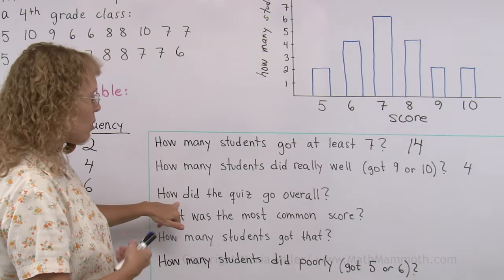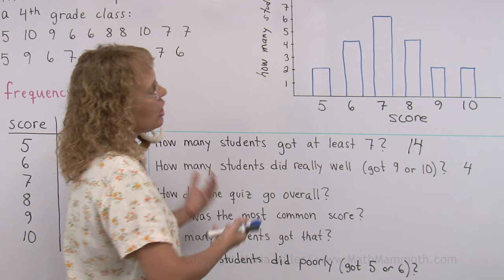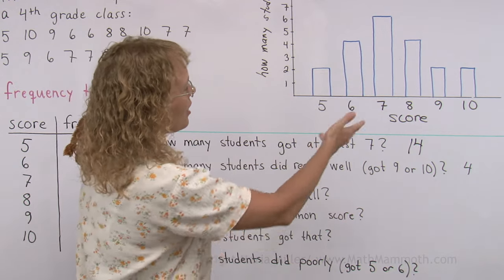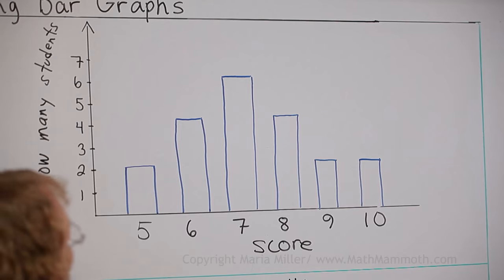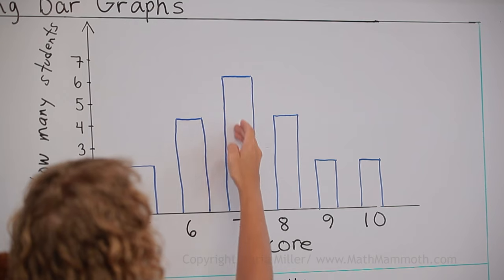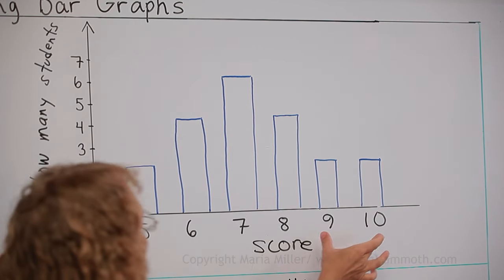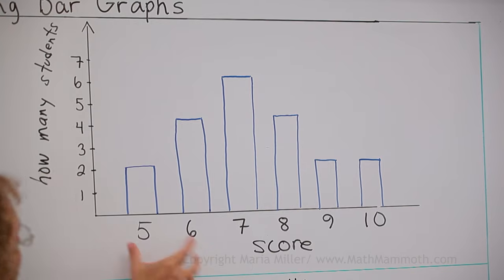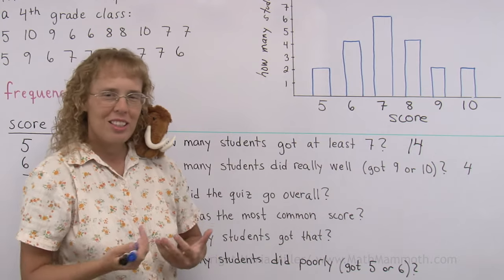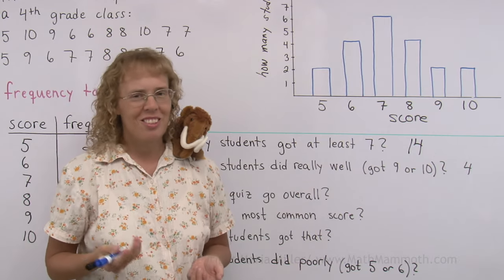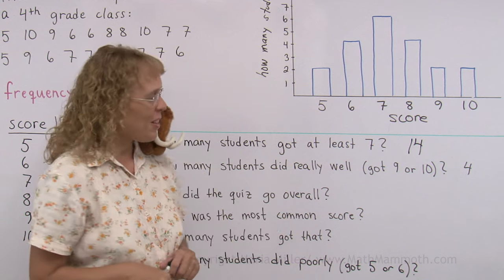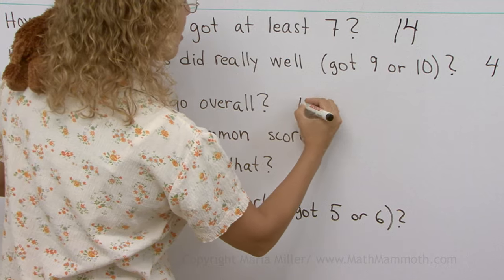How did the quiz go overall? What would the teacher think, for example? Okay, this is how the quiz went. We can see that many students got kind of middle score, seven. And some got a very good score and some got not so good score. I would say the quiz went kind of regular, normal, usual. Okay, let me write the answer here first. Regular.